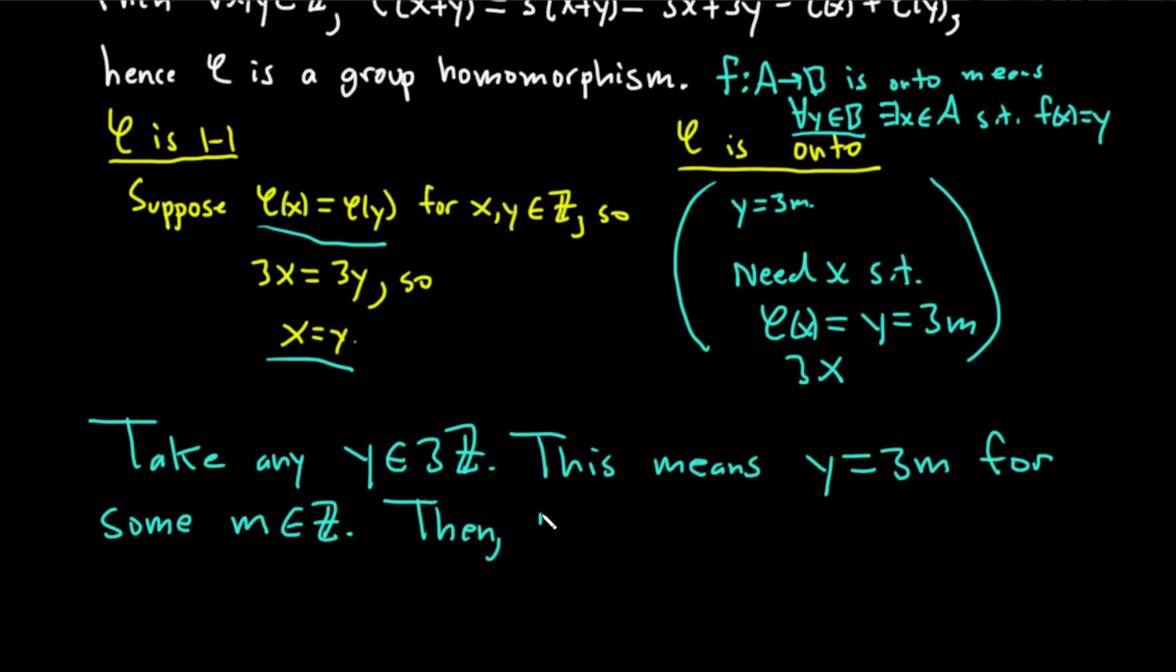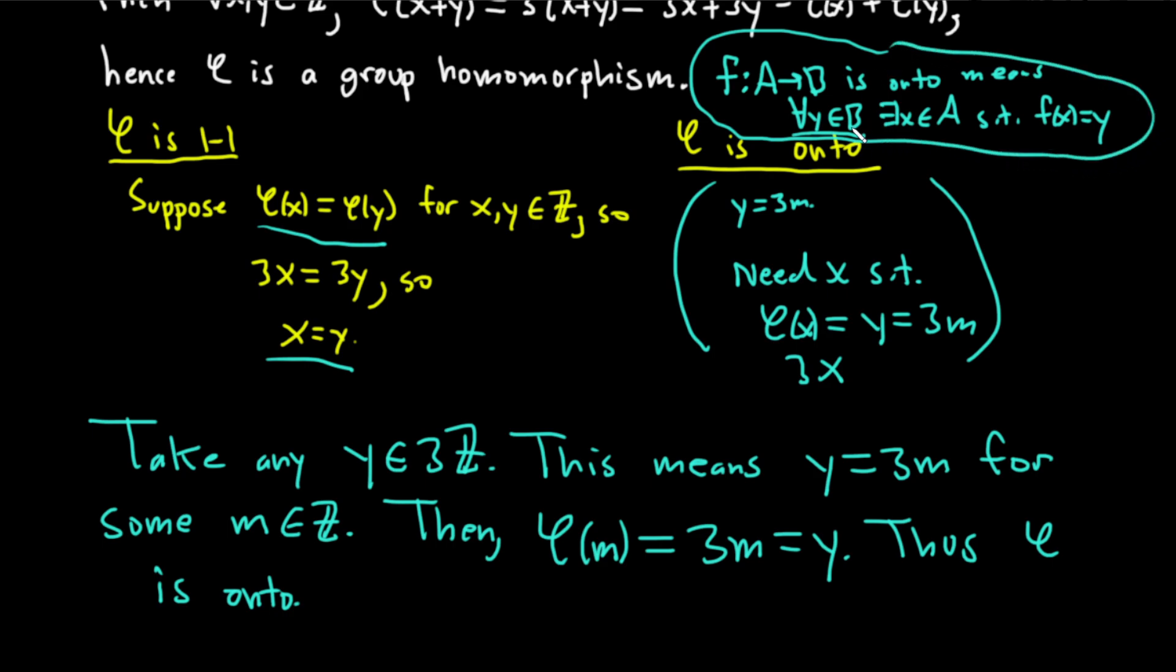Then, m is in Z, so we can look at phi of m, and that's equal to 3m, which is equal to y. Thus phi is onto. It's very easy, but in order to really understand the proof, you really have to understand the definition. For every y in b, there exists x in a such that f of x equals y. Let's see how we did that here.